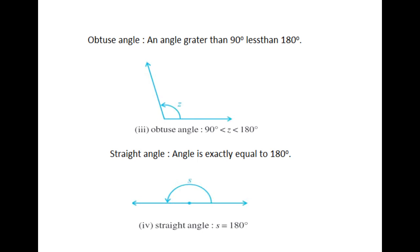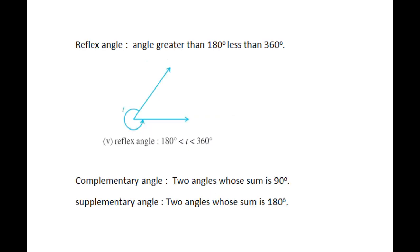Next, straight angle. See in figure. An angle exactly equal to 180 degrees is called a straight angle. See the reflex angle in figure. A reflex angle is greater than 180 degrees but less than 360 degrees.